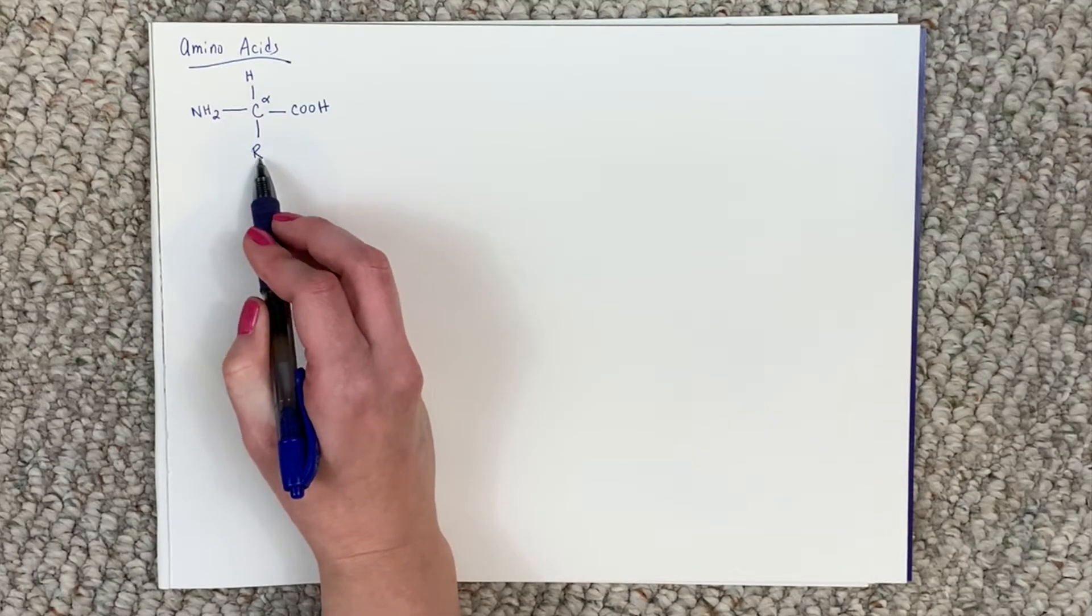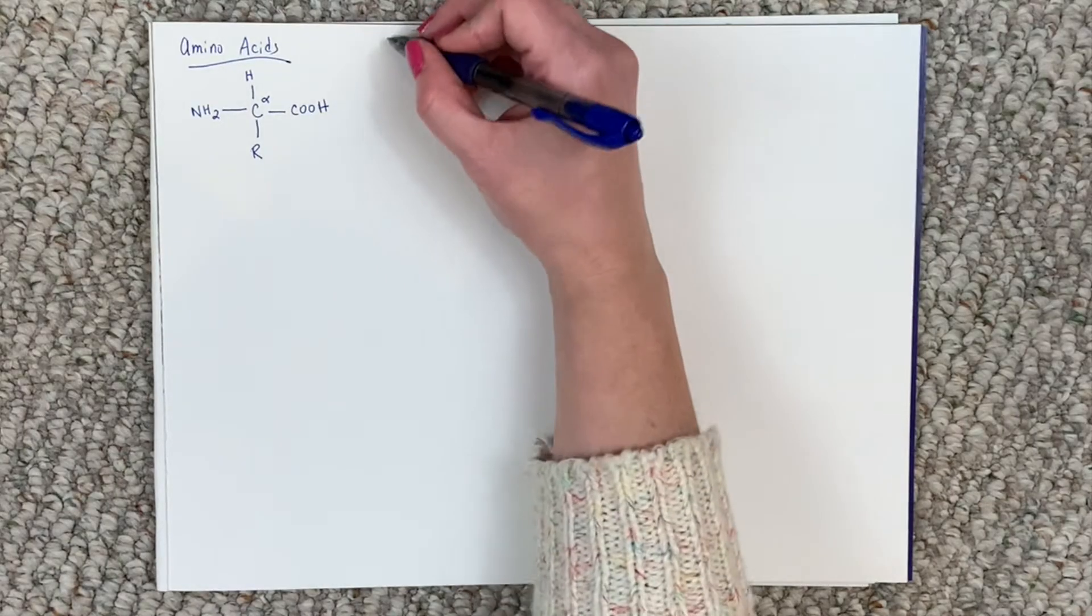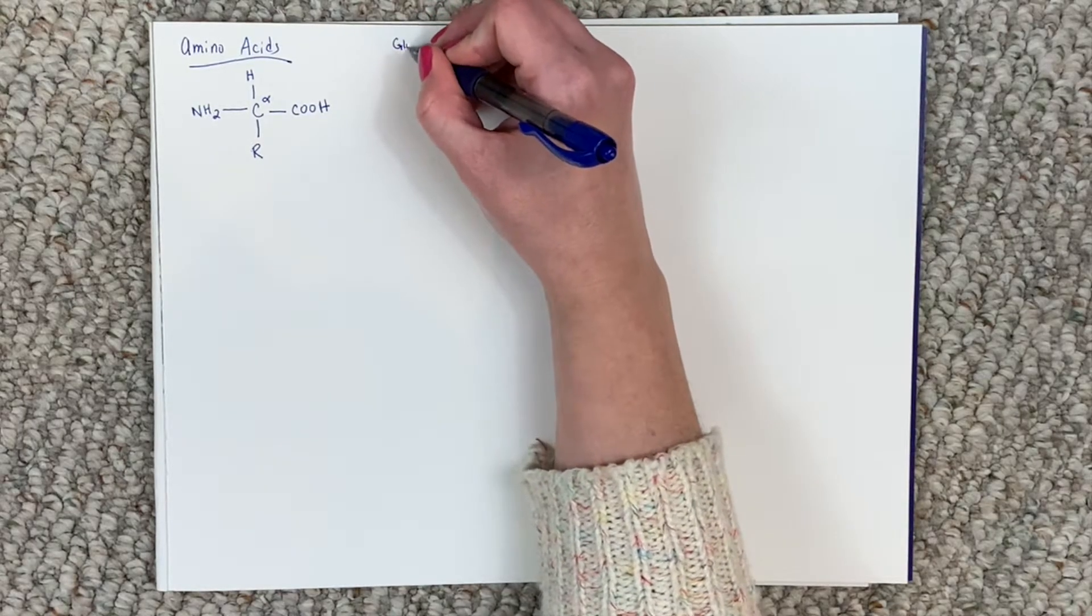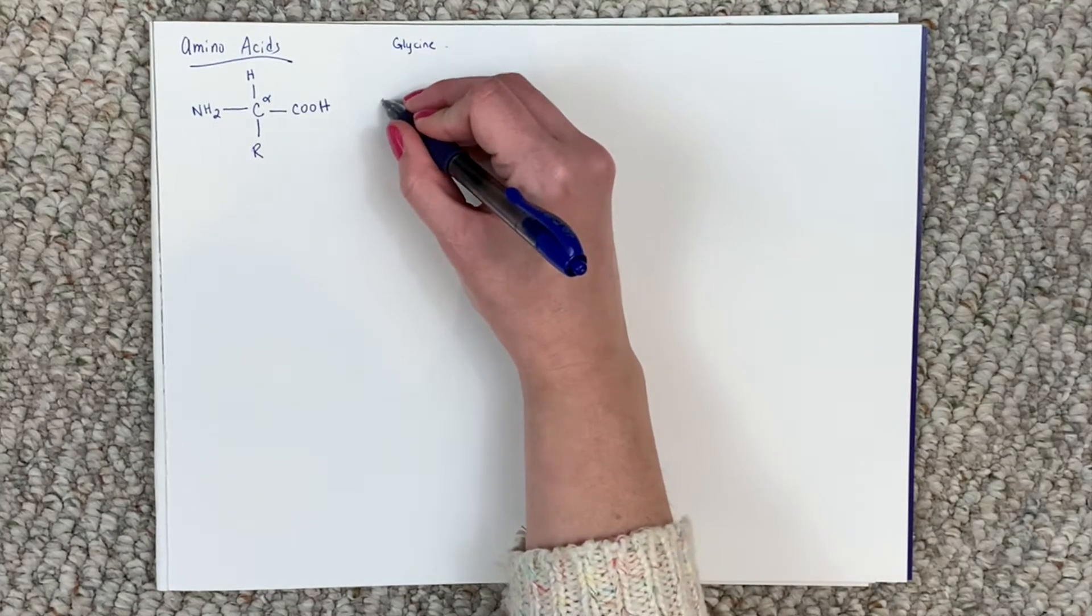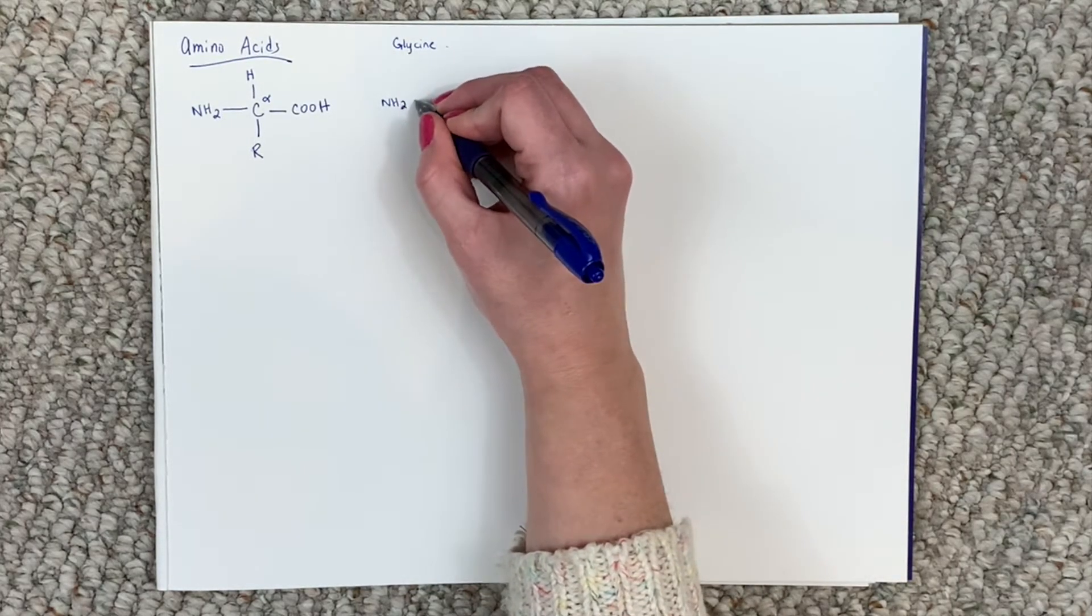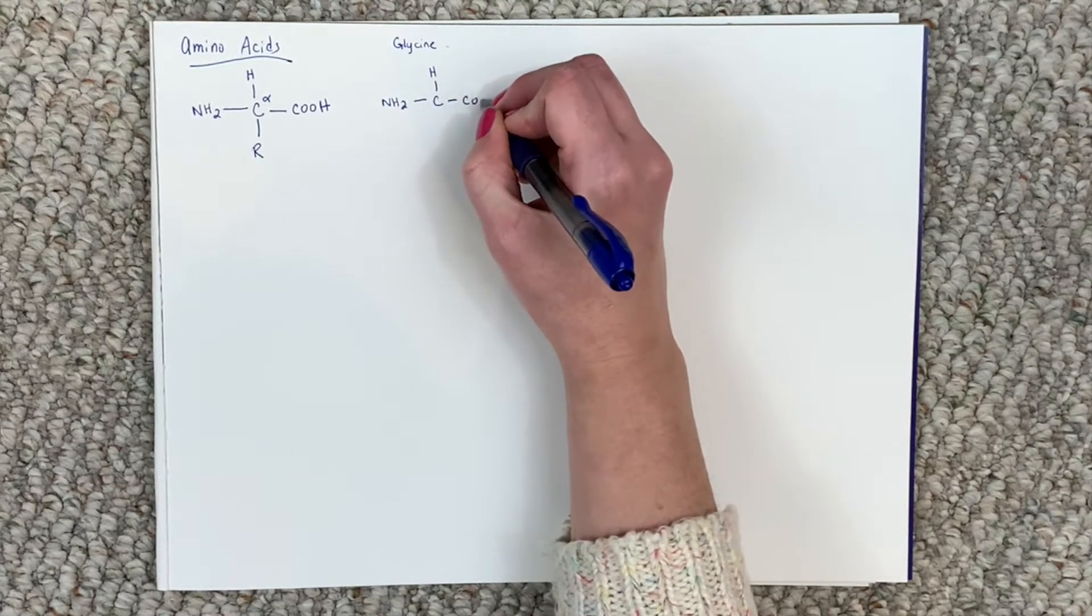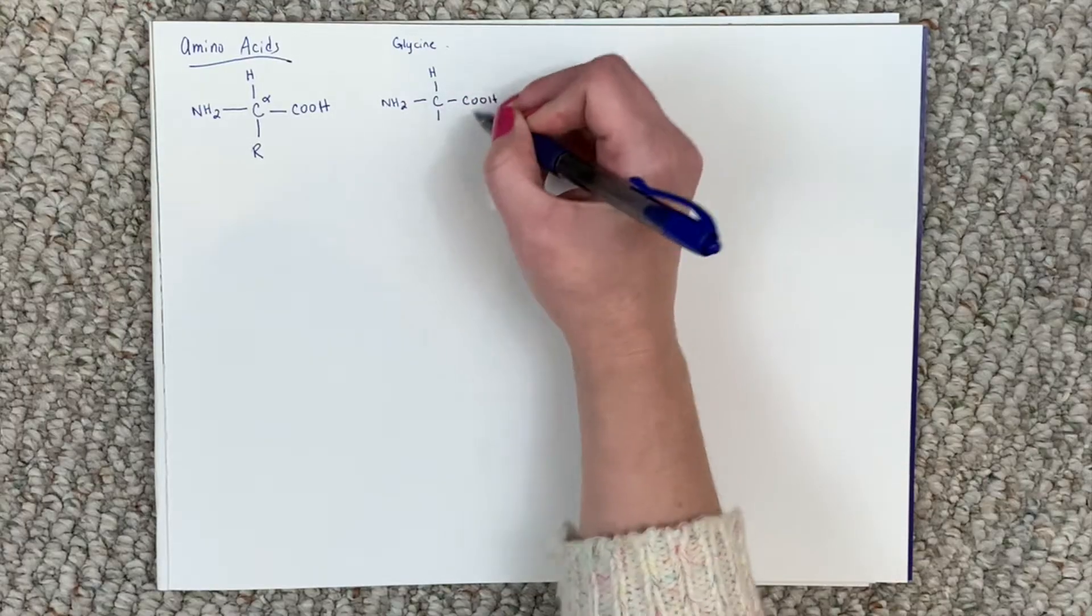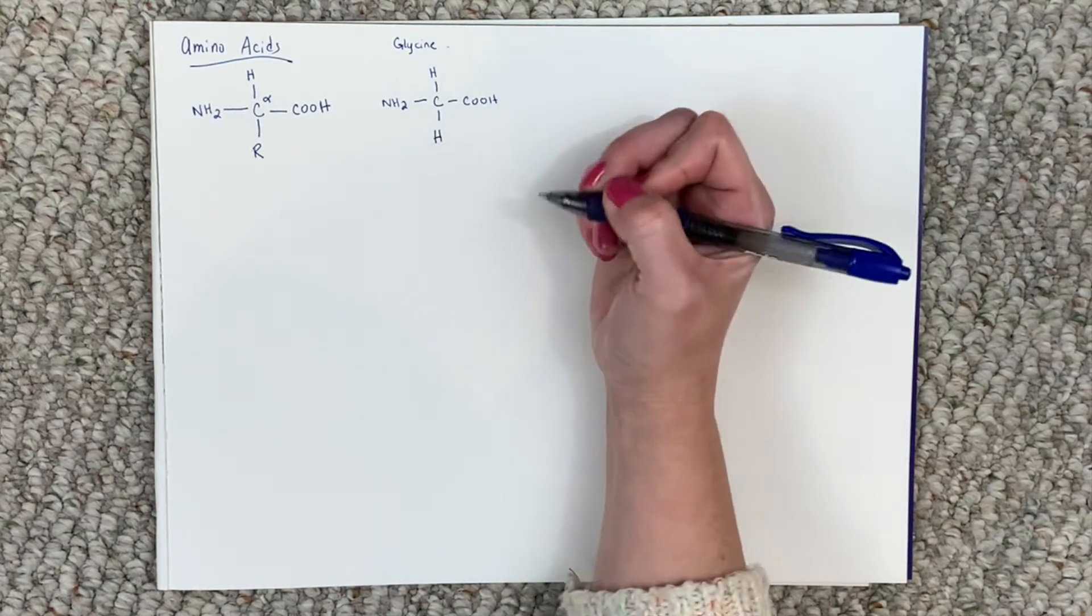So this R can be many different things. So for example, if we start with an easier amino acid to draw, let's draw glycine. What you do is you start with the NH2. That is the same. Go to your carbon. The hydrogen is the same as is that carboxylic acid, but this side chain for glycine is simply a hydrogen.